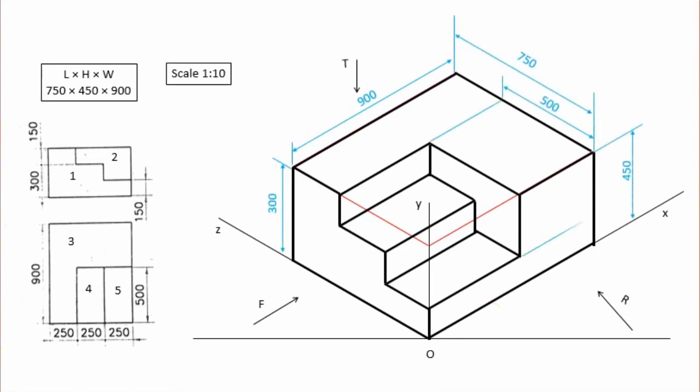The figure is completed. Let's start with the object. Objects are drawn with thick lines, axis and construction lines are drawn with thin lines. Thank you.